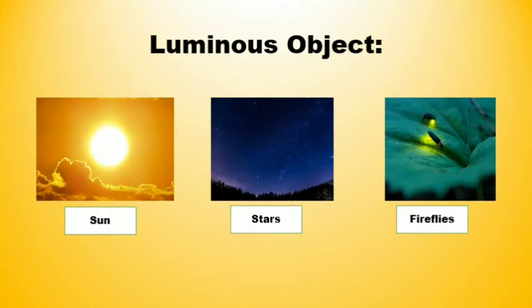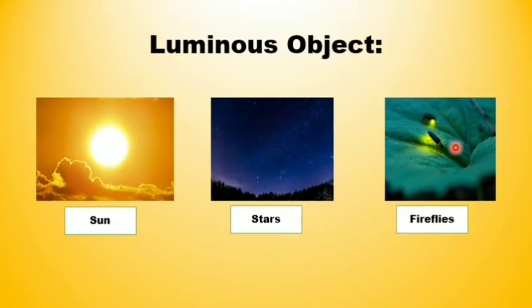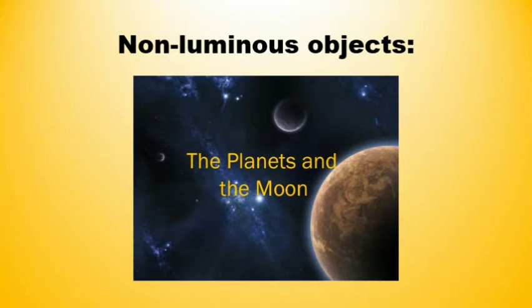Students, those objects which can produce or give out light of their own are called luminous objects. Those objects which cannot produce or give out their own light are called non-luminous objects. For example, planets and moon — these are the non-luminous objects.